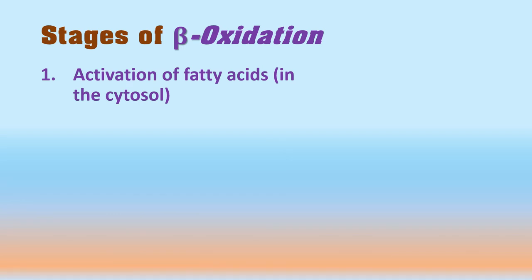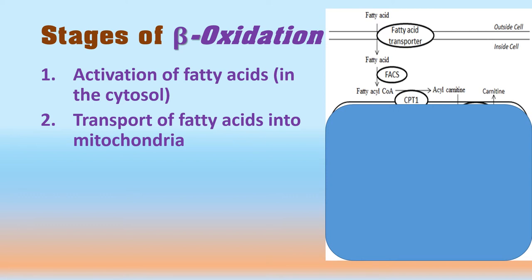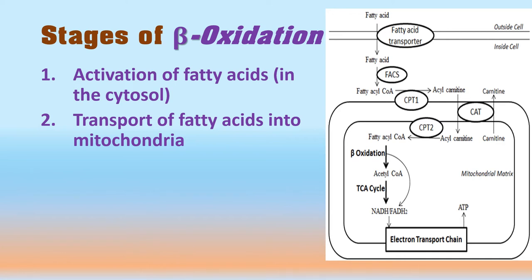To summarize so far: the fatty acid is activated in the cytosol by conversion to fatty acyl-CoA. This activated fatty acid is then transported into mitochondria using CAT1, translocase, and CAT2. Through these steps, activated fatty acyl-CoA enters the mitochondria, where CAT2 separates the carnitine, releasing acyl-CoA for the beta oxidation process. The third step — the actual beta oxidation — will be discussed next.